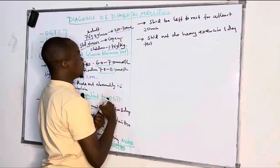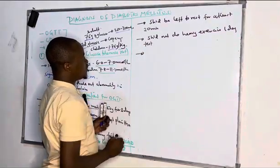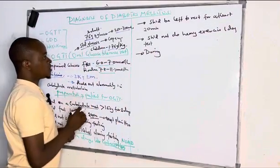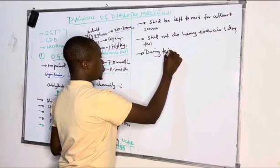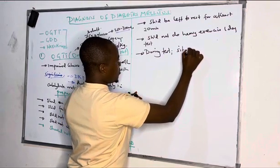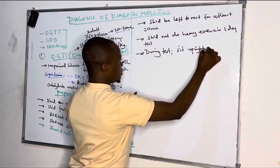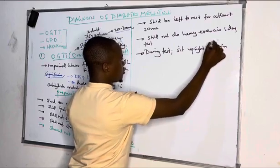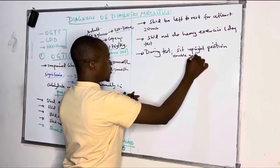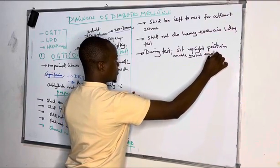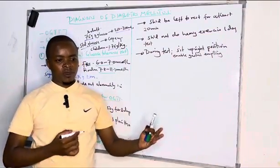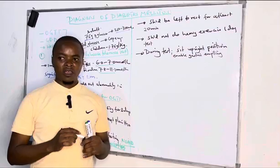After being left to rest for at least 20 minutes, during the test — after taking this standard glucose dose — the patient should sit upright in an upright position to enable gastric or stomach emptying. They should sit upright in one position and avoid movements and any heavy work during the test.